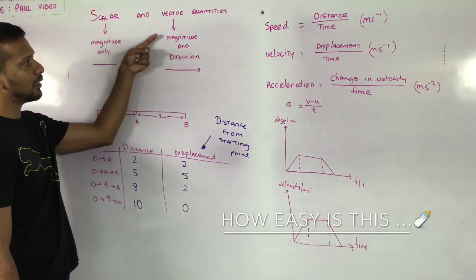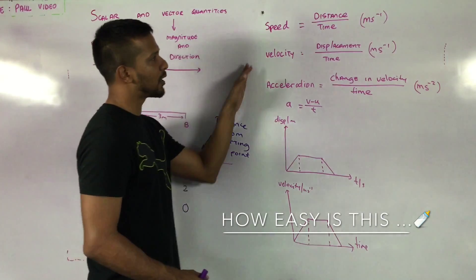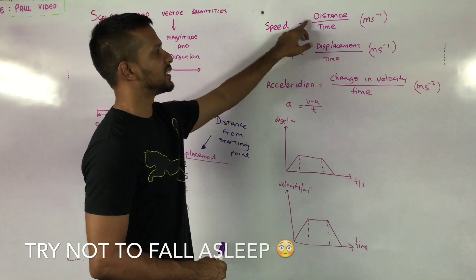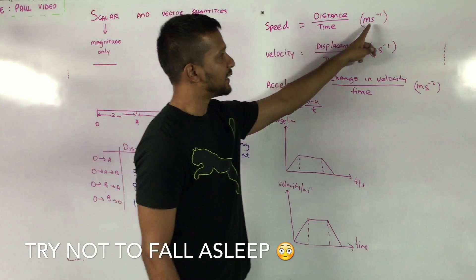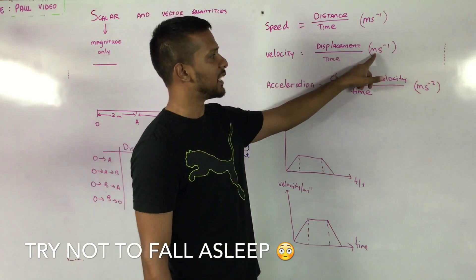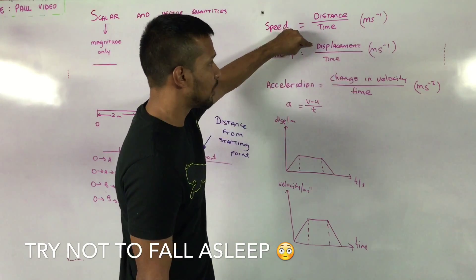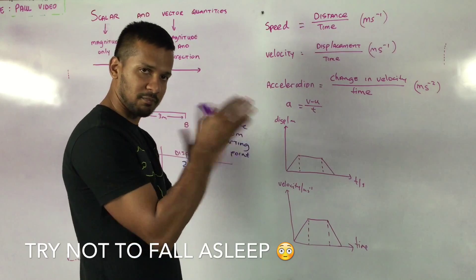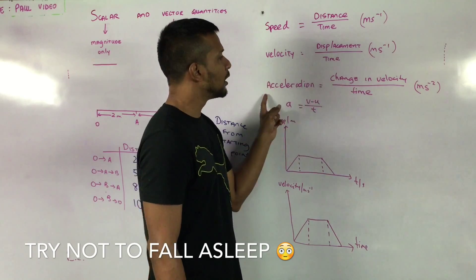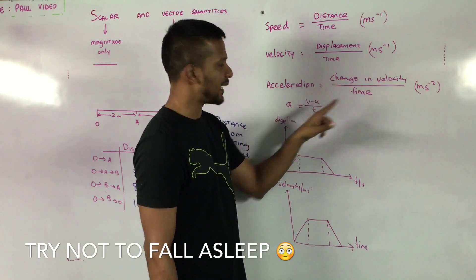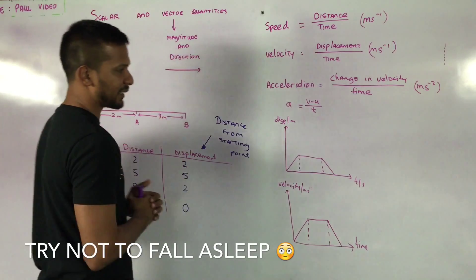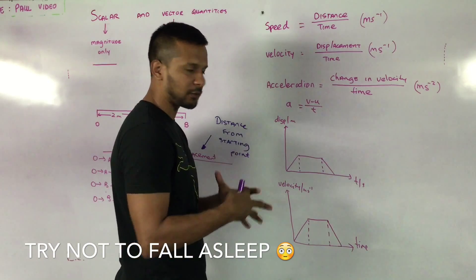Scalar has magnitude only; vector has magnitude and direction. Here we come to three new quantities: speed, velocity, and acceleration. Speed is distance travelled divided by time; its unit is m/s. Velocity is displacement divided by time; its SI unit is also m/s — and because it uses displacement, this makes it a vector quantity, so direction matters. Acceleration is the change in velocity per unit time. These are three things you must learn, and understanding the difference between a scalar and a vector quantity is where most of your questions come from.